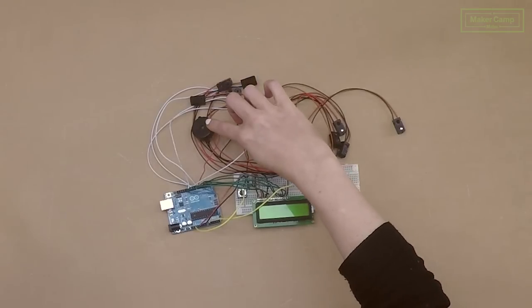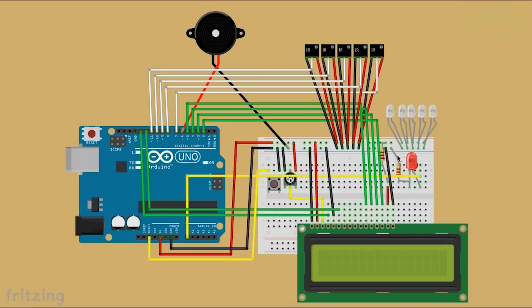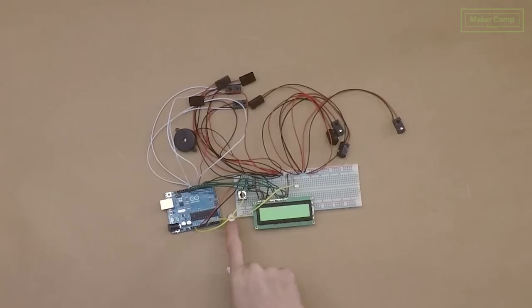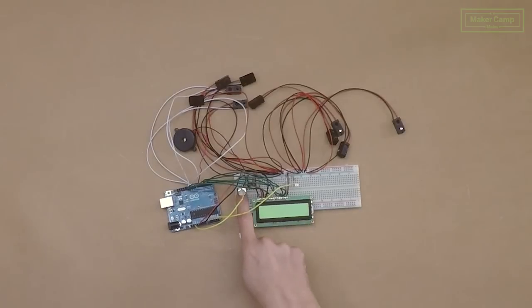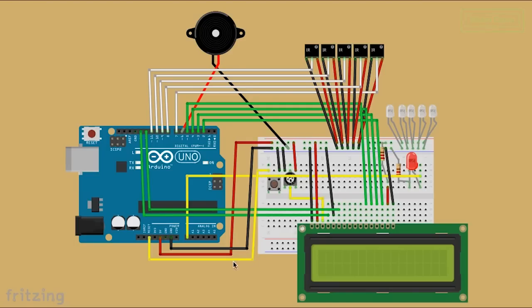We will use a piezo and an LED to signify whenever points are scored, or if someone has won the game. The last component is the push button, which we will use to start a new game. It's connected directly to the reset pin on the Arduino.